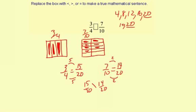And the 15 twentieths is greater. So that's the sign right there. And 3 fourths is greater than 7 tenths.